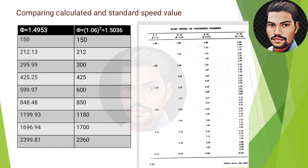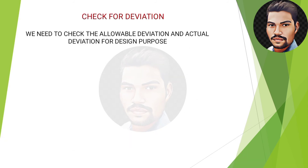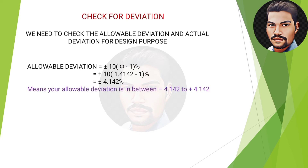You might be worried that we calculated 2400 rpm but got 2360 rpm from the standard table. There is nothing to worry about — 2360 rpm will work for the gearbox if it satisfies all design criteria. To verify, we check the deviation using the formula: allowable deviation = ±10(φ−1)%, which gives a range of −4.142% to +4.142%.